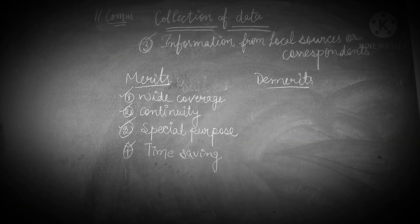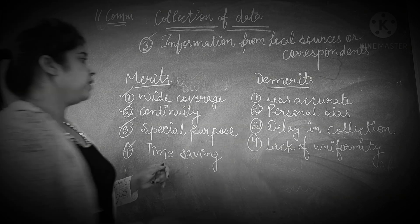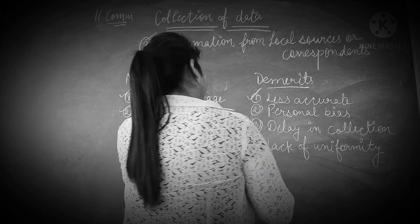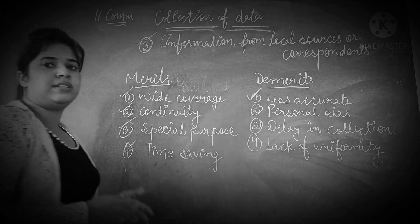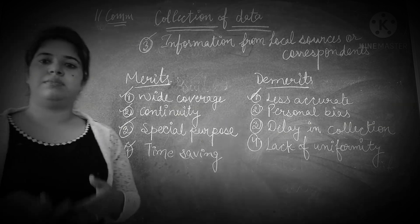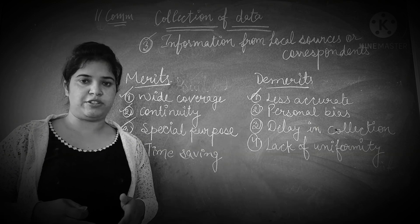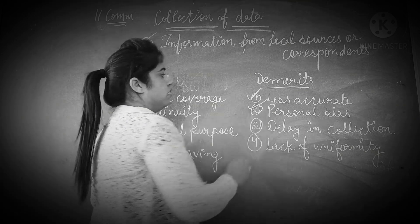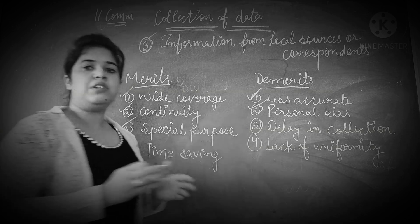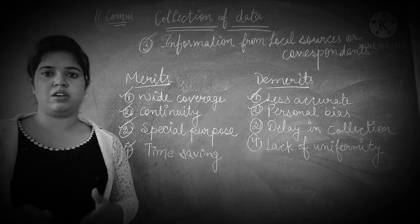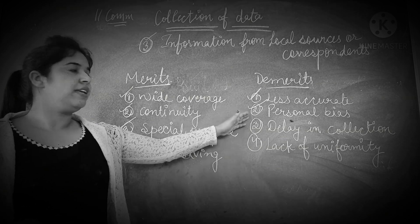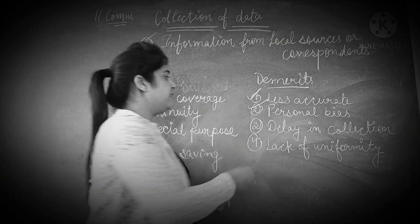Now if we talk about the demerits. The first is less accurate — this method is not as accurate compared to other methods of collecting information. The second demerit is personal bias, because a large number of local persons are involved, so there can be the presence of personal bias.